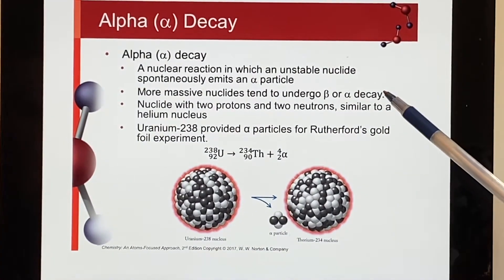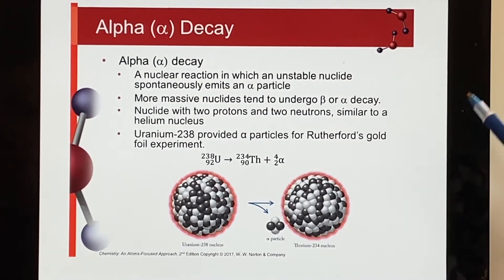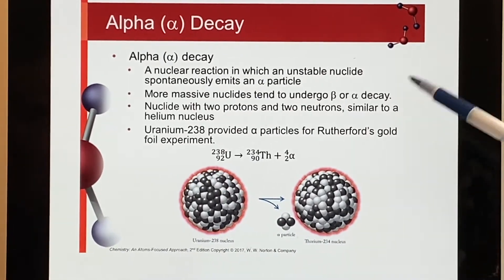When you have very massive nuclides, that's when you're most likely to see the alpha and beta decay. And that's also why you see these names of alpha and beta, because it was when they first started finding out about the very, very heavy elements.